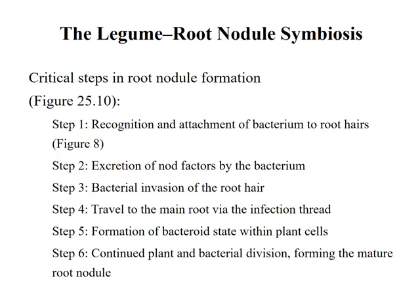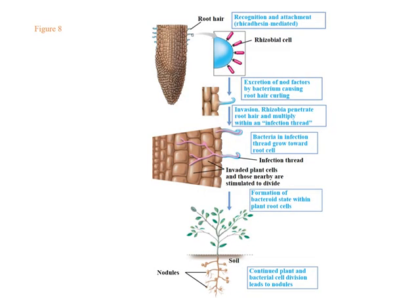Critical steps in root nodule formation: Step 1 is recognition and attachment of the bacterium to root hairs. Step 2 is excretion of nod factors by the bacterium. Step 3 is bacterial invasion of the root hair. Step 4 is travel to the main root via the infection thread. Step 5 is formation of the bacteroid state within plant cells. Step 6 involves continual plant and bacterial divisions forming the mature root nodule. In this slide you can see all these associations and steps.